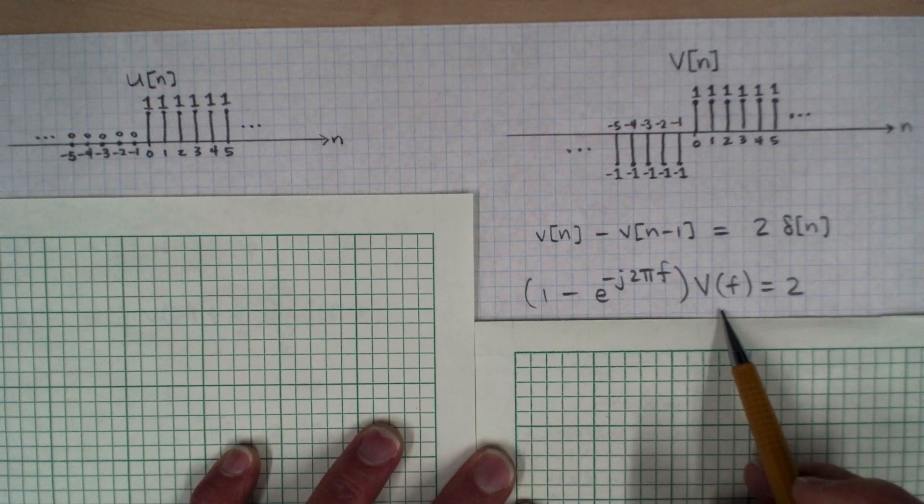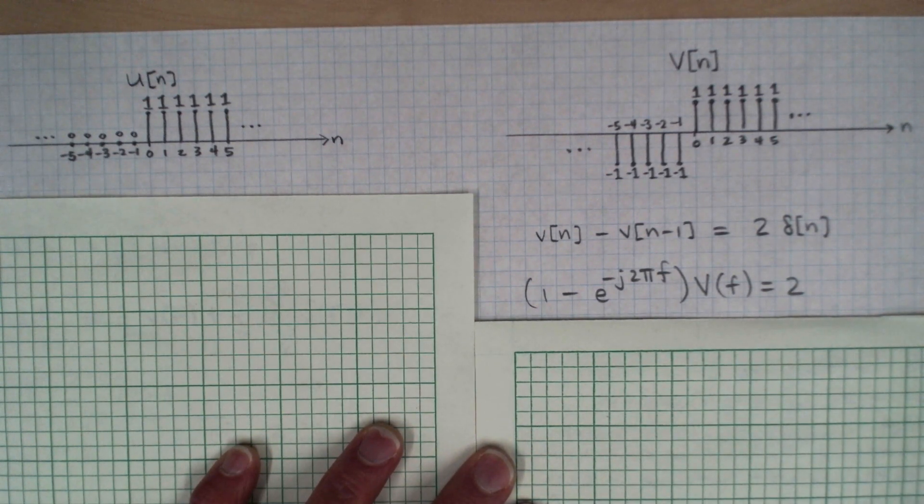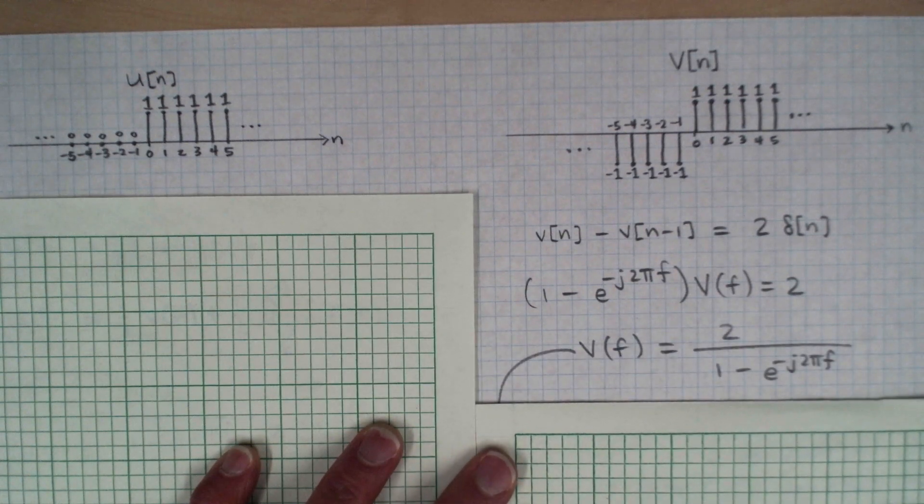We can figure out the Fourier transform of V by solving this equation for V, and that gives us this expression here.